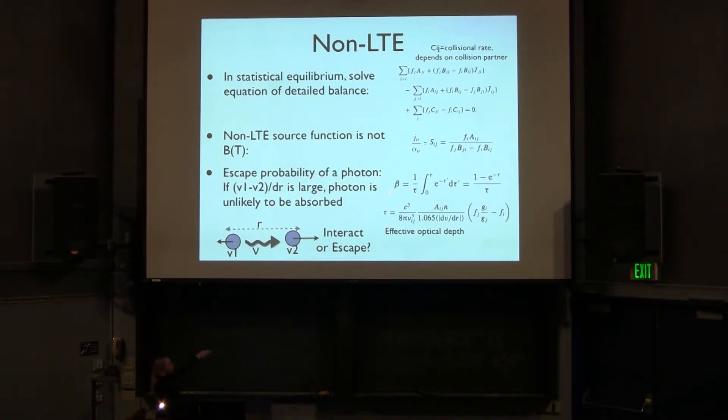So the escape probability of this photon has been codified using this formula beta. Now, beta here is really an arbitrary function and the important point is that it goes to two different limits. When the optical depth is high, then beta goes to zero. So in high optical depth, the photon is not going to escape. It is going to be absorbed with a very high probability. But in the other case, when the optical depth is small, then this goes to one over tau. So then in that case, the photon has a very high probability of escaping. So in this formula, tau depends upon this velocity gradient.